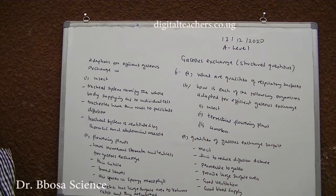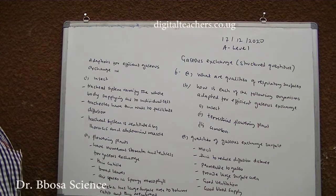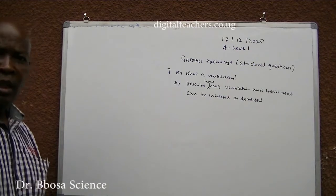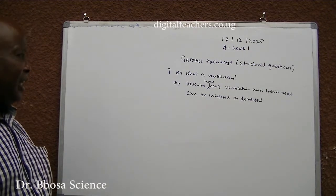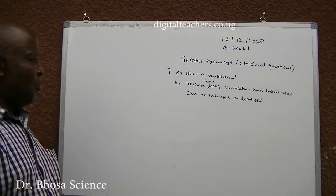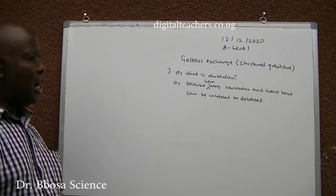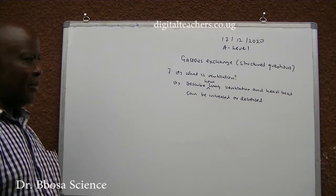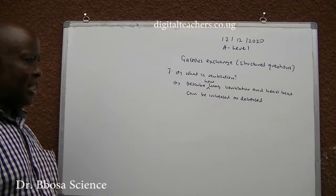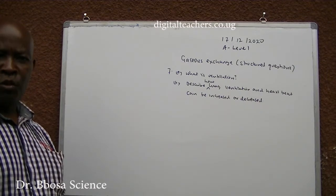Amoeba has a large surface area to volume ratio and a thin membrane to facilitate diffusion. Number 7A: What is ventilation? Number 7B: Describe how lung ventilation and heartbeat can be increased or decreased.